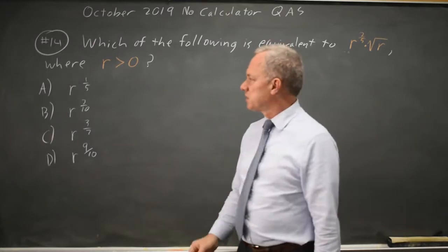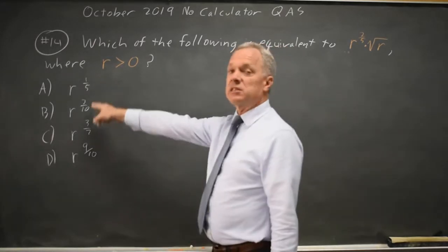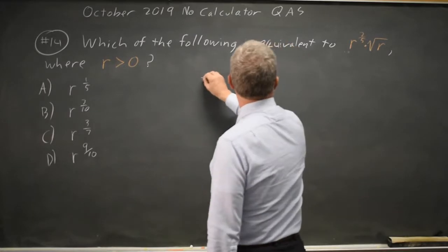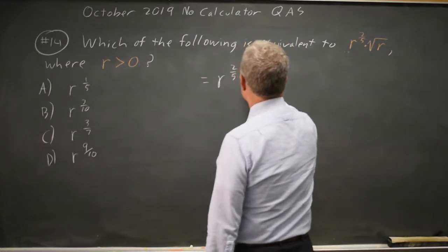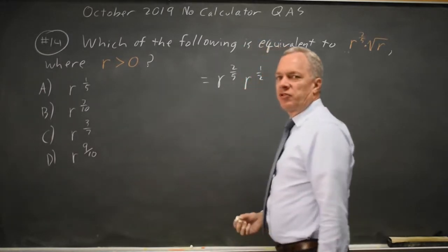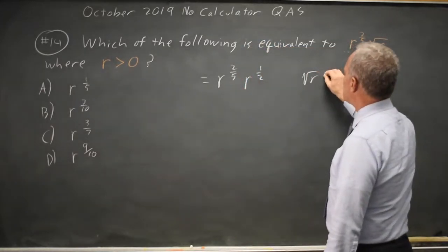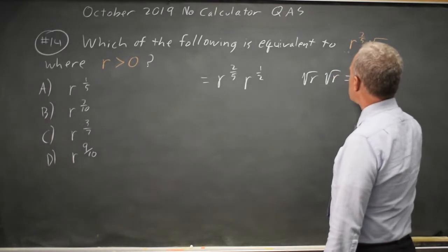All our choices have rational exponents, so this is equal to r to 2 fifths, and then root r is r to the 1 half. If you're trying to remember that, remember root r times root r equals r.